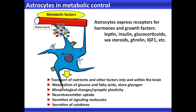Astrocytes are really interesting cells because they express a number of different receptors for metabolic hormones, including leptin, insulin, glucocorticoids, and sex steroids. They also transport a number of these metabolic factors into the central nervous system, including glucose transport and leptin transport — processes that affect what the neurons see or do. They metabolize glucose and fatty acids, store glycogen, and have sometimes been referred to as the livers of the brain. They respond to these factors, changing their morphology, and are involved with synaptic plasticity in both the developing and adult brain.